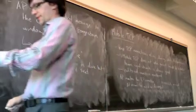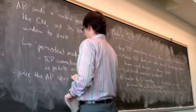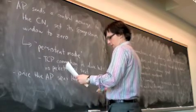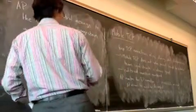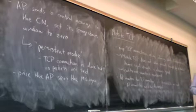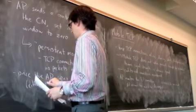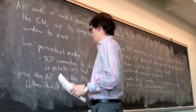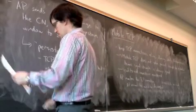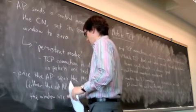The resolution is: once the access point sees the mobile node again — and in my office example, it could be a new access point, an entirely new access point, so either the old AP or a new one — the window size is reset to its old value.